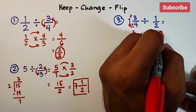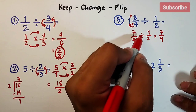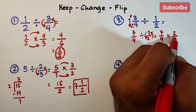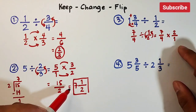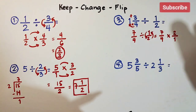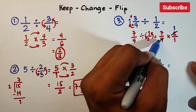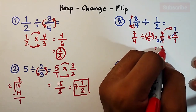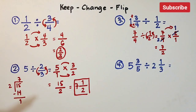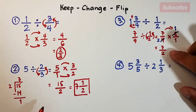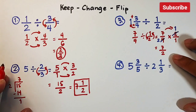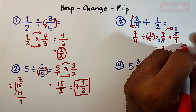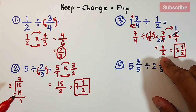Now apply keep, change, and flip: keep 7 over 4, change division to multiplication, flip — interchange to get 2 over 1. We have 7 times 2 over 4 times 1. We can use cancellation — 2 and 4 cancel out, becoming 1 and 2. So we have 7 times 1 over 2 times 1, which equals 7 over 2. This is an improper fraction, so we convert it to a mixed number: 3 and one-half. Simply divide 7 by 2 and you get 3 and one-half — that is the answer for item number 3.